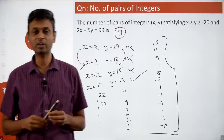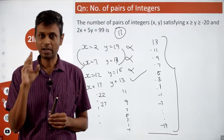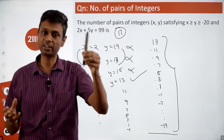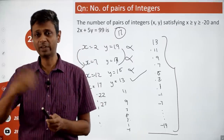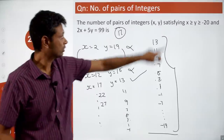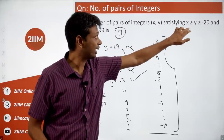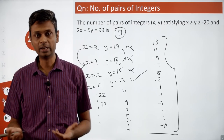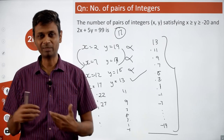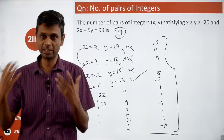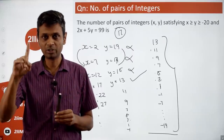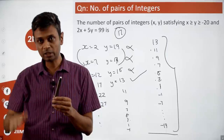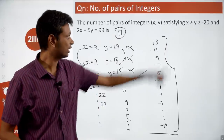These kinds of questions: find one solution, then think about how x and y move such that one offsets the other to give a pattern. After finding the pattern, apply the constraints (here x ≥ y ≥ −20) to count valid pairs.